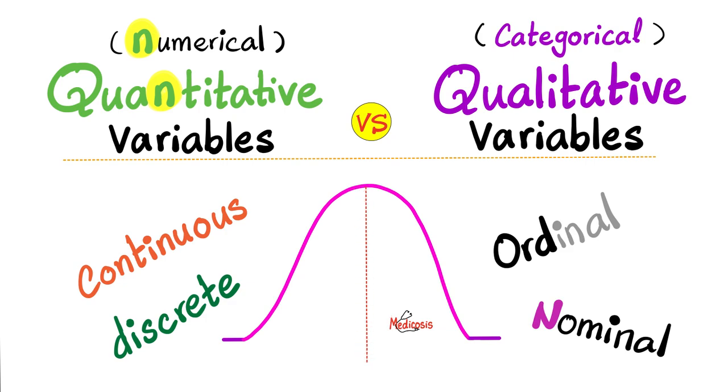In the previous videos, we talked about the measures of central tendency, such as the mean, the median, and the mode. We also talked about the range. And we talked about biostatistics, such as sensitivity, specificity, positive predictive value, negative predictive value, positive likelihood ratio, negative likelihood ratio, incidence, prevalence, and accuracy.